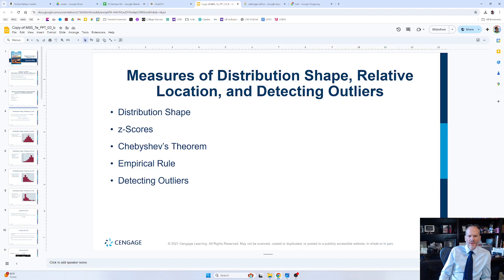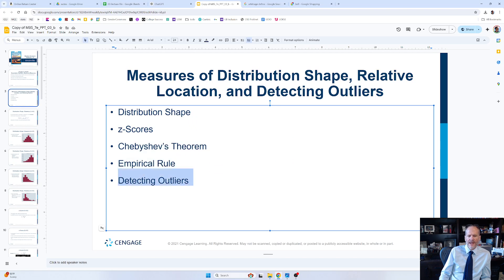So we've looked at z-scores, we looked at Chebyshev's theorem, we looked at the empirical rule, we looked at detecting outliers and the rule of thumb that we could use of three standard deviations, having a z-score of three or greater.